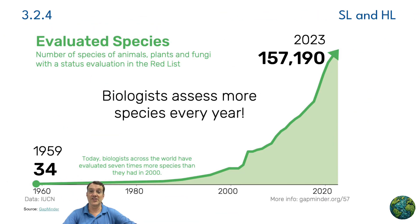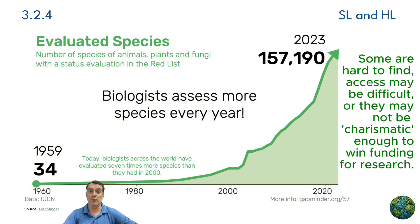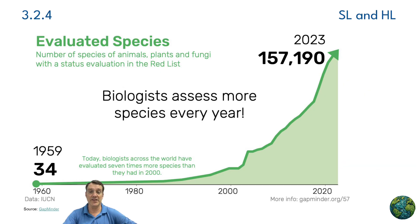The IUCN Red List has grown substantially since its creation. As you can see in this graph, assessments have increased from just 34 species in 1959 to over 157,000 species in 2023. This dramatic increase reflects both growing conservation concern and improved scientific capabilities. However, it's important to note that this represents only a tiny fraction of all known species. Many taxonomic groups remain poorly studied, especially invertebrates, fungi, and plants. The growing assessment database helps identify patterns of extinction risk across different regions and taxonomic groups.